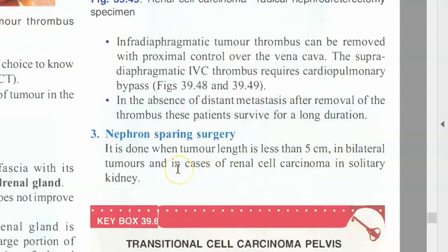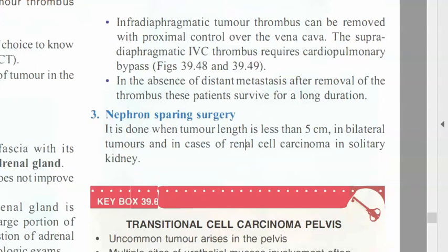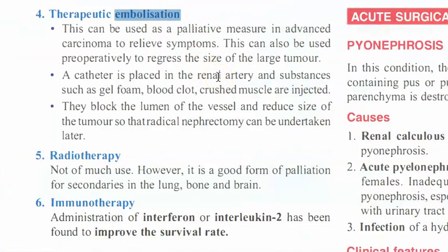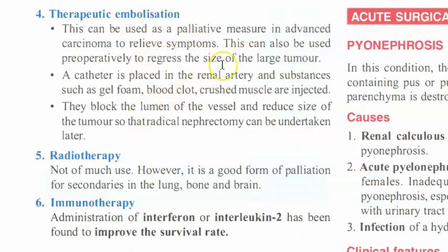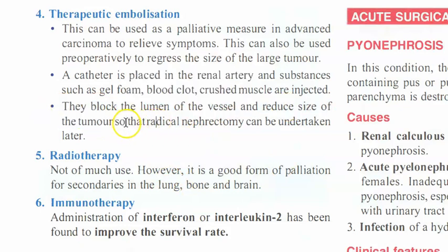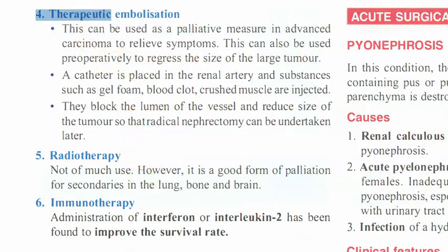Nephron-sparing surgery is performed when tumor length is less than 5 cm or when the patient has a solitary kidney. Therapeutic embolization is used in advanced carcinoma to relieve symptoms such as pain and to regress the size of a large tumor, potentially allowing radical nephrectomy to be undertaken later.